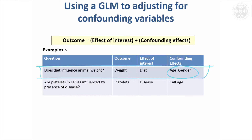What you can do using a general linear model is just put age and gender into the model, so you're analysing weight and you fit diet, age, and gender. The results for diet are then going to be adjusted for the age and gender of the animals. That's quite a powerful thing to be able to do if you think your groups are unbalanced in any way.